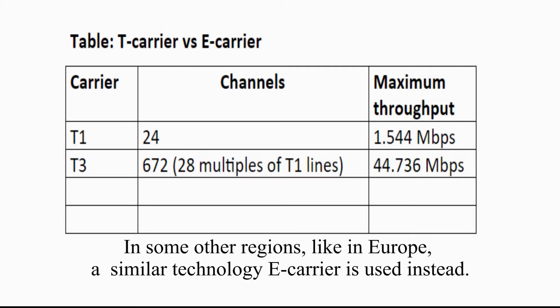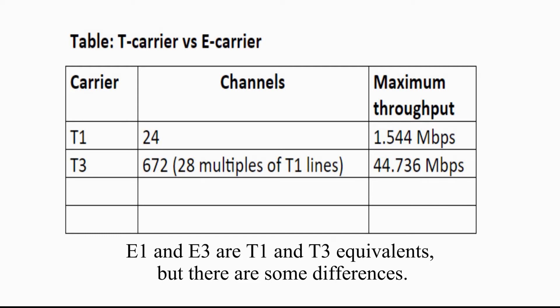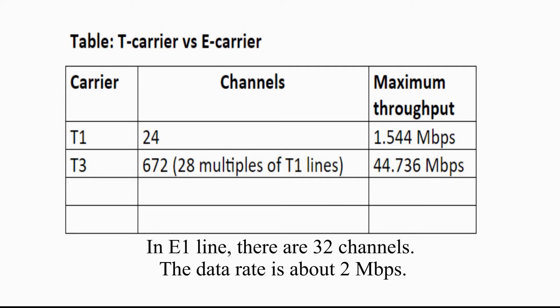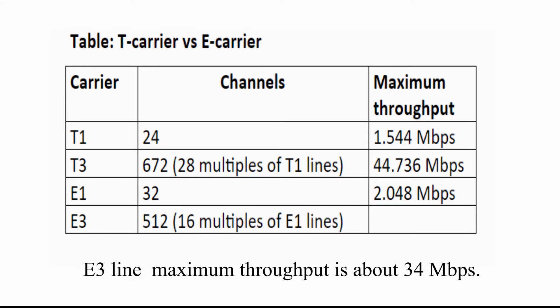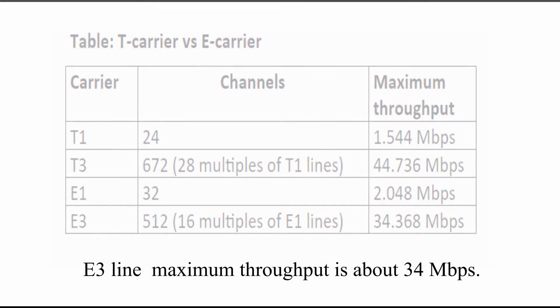In some other regions, like Europe, a similar technology called E-carrier is used instead. E1 and E3 are T1 and T3 equivalents, but there are some differences. In an E1 line, there are 32 channels and the data rate is about 2 Mbps. In an E3 line, there are 512 channels, or it consists of 16 E1 lines, with a maximum throughput of about 34 Mbps.